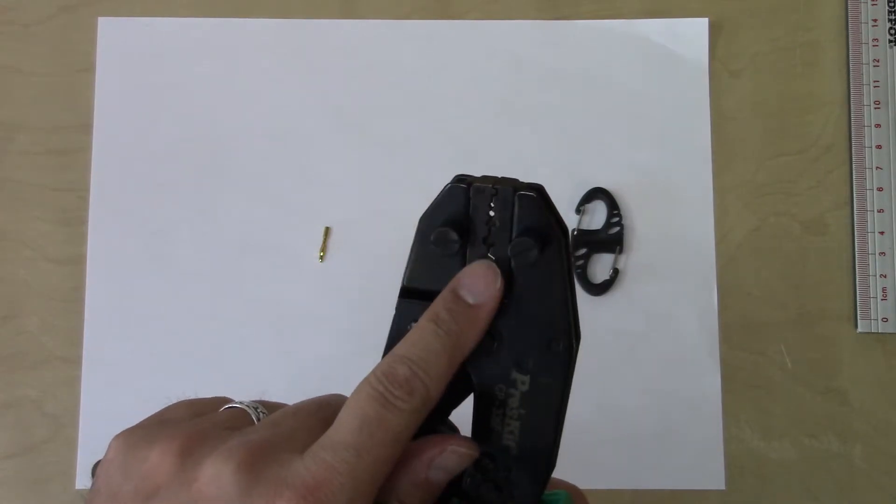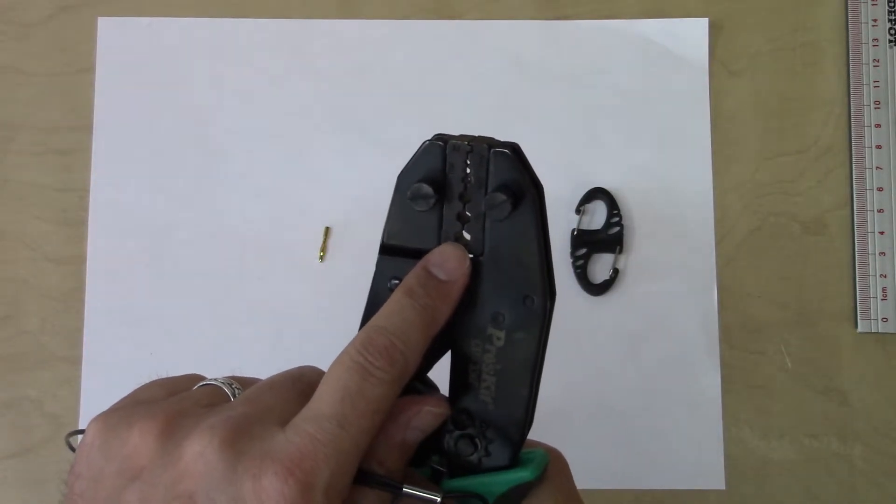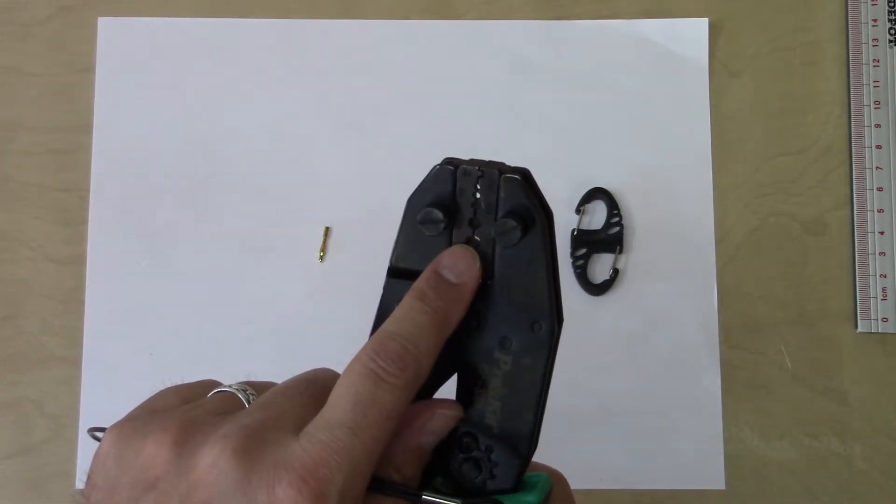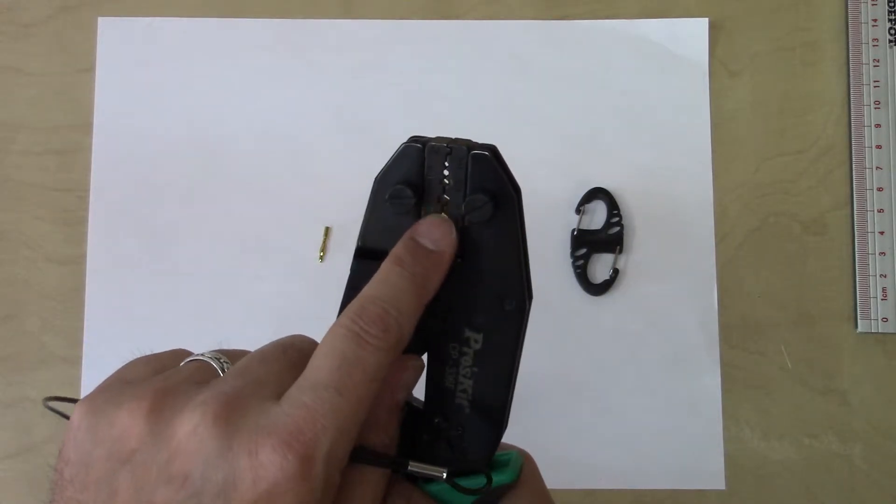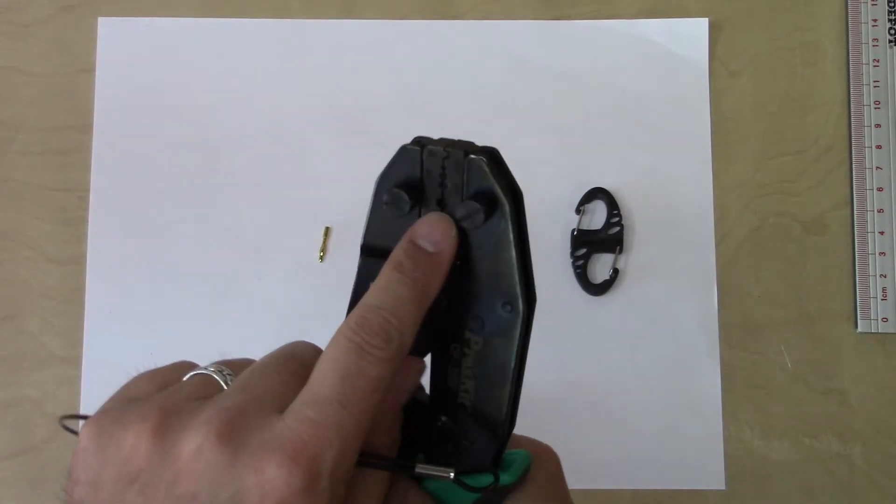This particular jaw set is for RG58 and 174 coax, so I use one of the smaller hex crimp holes in that coaxial crimper.